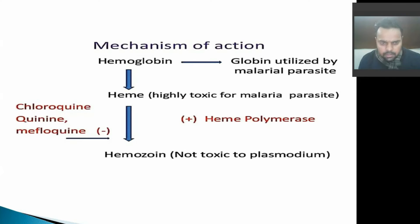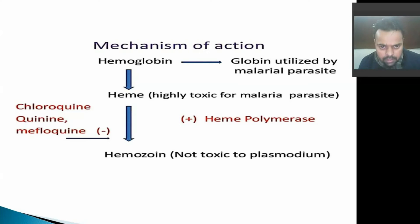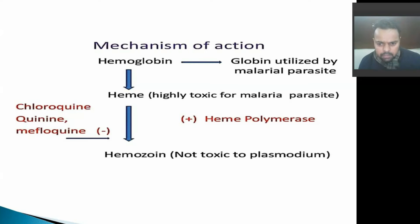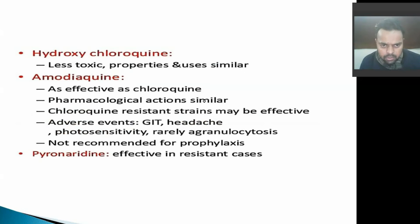The mechanism of action of chloroquine acts on the heme polymerase enzyme. When schizonts enter into our blood, hemoglobin in erythrocytes forms a malarial vacuole with the help of heme polymerase. However, chloroquine inhibits the action of heme polymerase and forms hemozoin, which is not toxic to plasmodium, so malaria will not take place in our body. Hydroxychloroquine is less toxic and its properties and uses are the same as chloroquine.